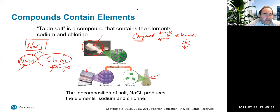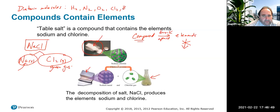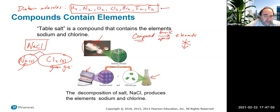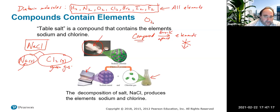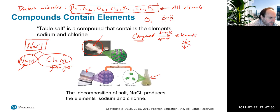The diatomic molecules are important to keep in mind. These are elements that naturally come as two atoms: hydrogen, nitrogen, oxygen, chlorine, bromine, iodine, and fluorine. If you have elemental or molecular oxygen, it is not just O — it actually comes as O₂, two oxygen atoms in gas form.